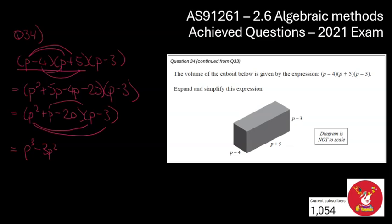I'm now going to repeat the same with the p. So I'm going to go there, p times p, and then p times negative 3. So it's going to be plus p squared minus 3p.